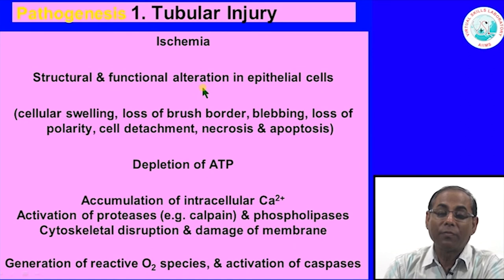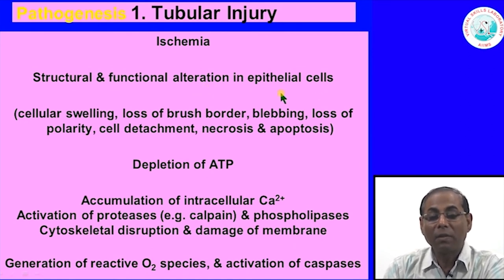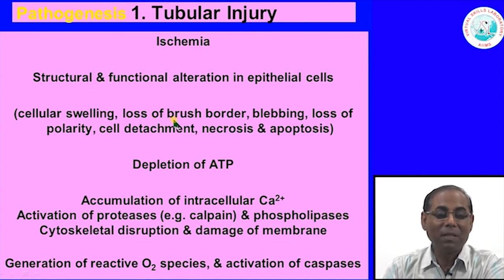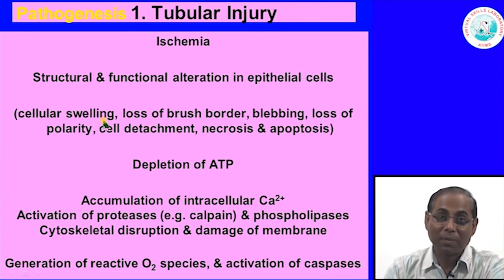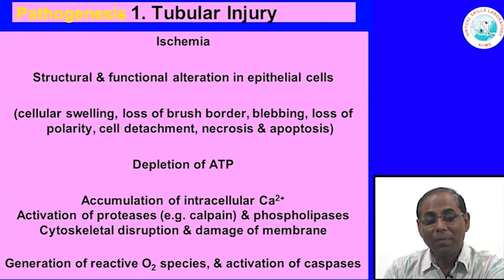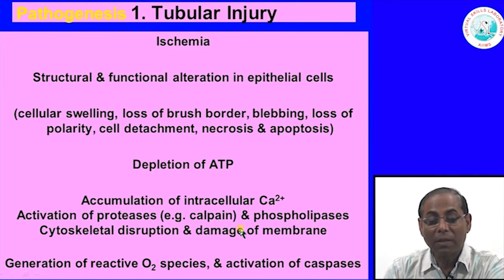The pathogenesis of acute tubular injury in ischemia involves structural and functional alteration in epithelial cells. As with any cell under ischemia, there is initially cell swelling, then loss of the brush border — particularly in proximal tubular epithelial cells — followed by blebbing of the sub-membranous region, loss of polarity, cell detachment, necrosis, and apoptosis. Depletion of ATP leads to accumulation of intracellular calcium, activation of proteases, particularly calpain and phospholipases, causing cytoskeletal disruption and membrane damage.